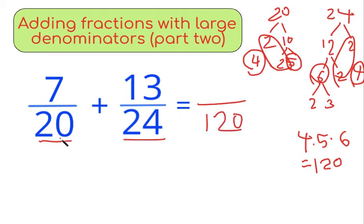Now what we have to do is figure out how many times 20 and 24 go into 120. 120 divided by 20 is 6, so we multiply the top number by 6, and that's 7 times 6, which is 42.